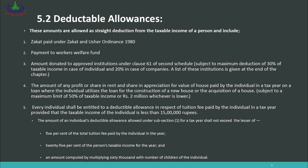Number 5: Every individual shall be entitled to a deductible allowance in respect of tuition fee paid, provided that the taxable income of the individual is less than rupees 15 lakh. The allowable amount is the lowest of: (1) 5% of the total tuition fee paid in the year, (2) 25% of the person's taxable income for the year, or (3) an amount computed by multiplying rupees 60,000 by the number of children of the individual. Whichever of these three is the lowest amount will be deducted from total income to arrive at taxable income.